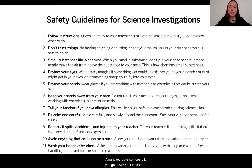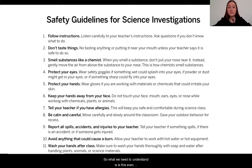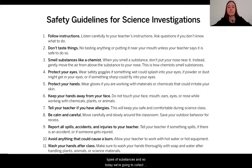All right, you guys. Hopefully you got down your ideas, or you shared it with a friend or family member, for what you're thinking about where the rust came from. Was it the pipes that turned into the rust? Was it a mixture of different things? How did this occur? So what we need to understand is, is this even possible in the first place? Can substances turn into different types of substances? Today we're going to collect some evidence through an investigation.